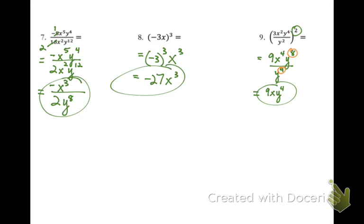8 minus 4 is 4. All we are left in the denominator is a 1, and we don't need to write that. So our final answer is 9xy to the 4th.